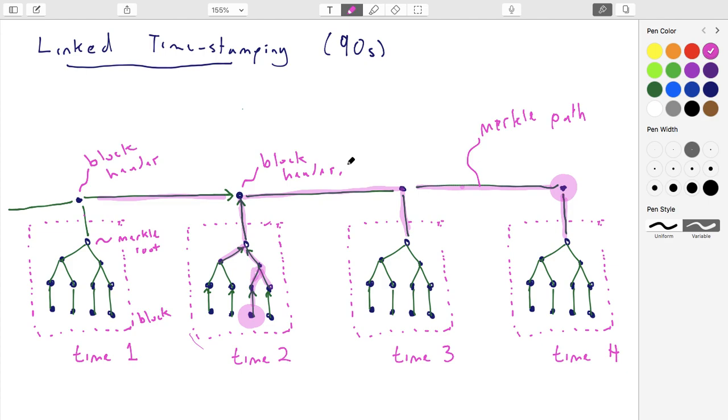So that's linked timestamping. This is the data structure. It's central to blockchain. Next, what we're going to do is switch gears completely. We're going to talk about something not related to commitments anymore, and then we'll circle back to this data structure, and we'll improve it in a few ways.